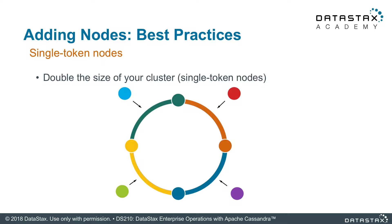If you're using single token nodes — one token assigned per node — the best way to expand your cluster is to double the size. That makes it easier to assign those tokens, and the token ranges have to bisect each one of the other token ranges. You really have to calculate this before you do it, which is why single token nodes are not as popular.